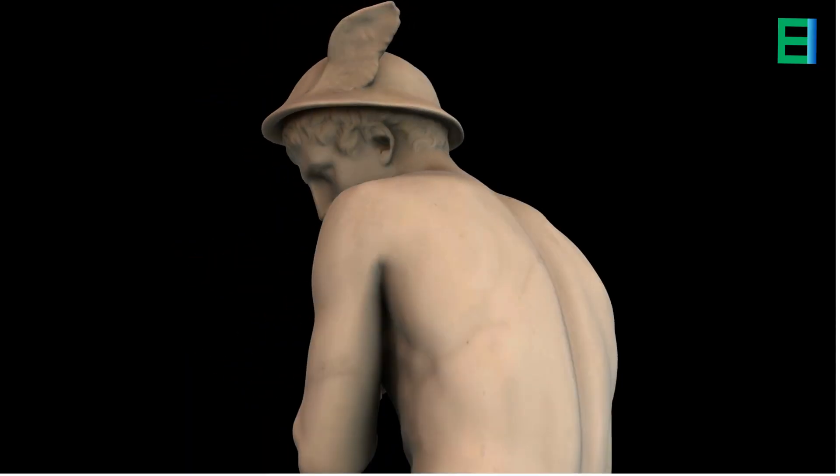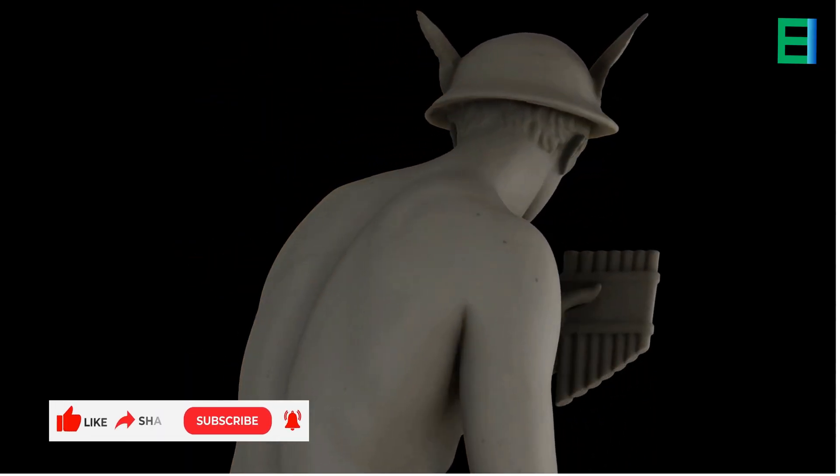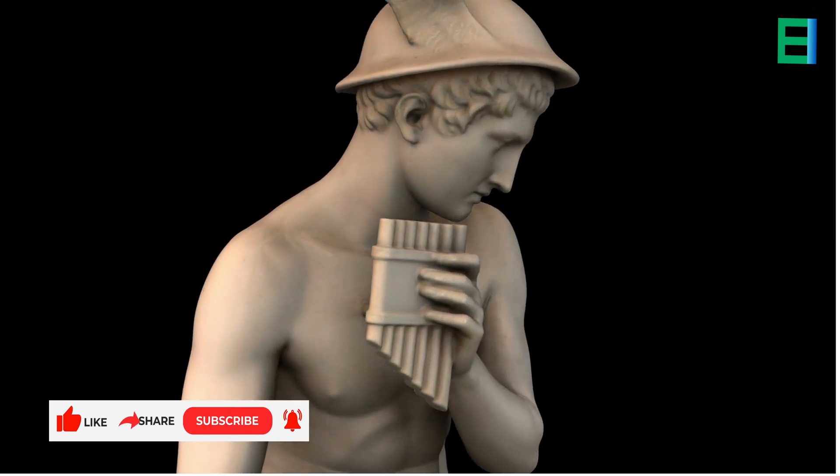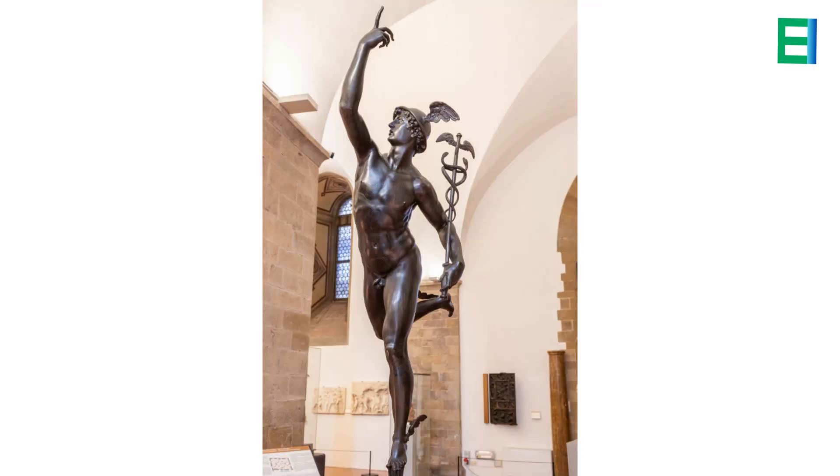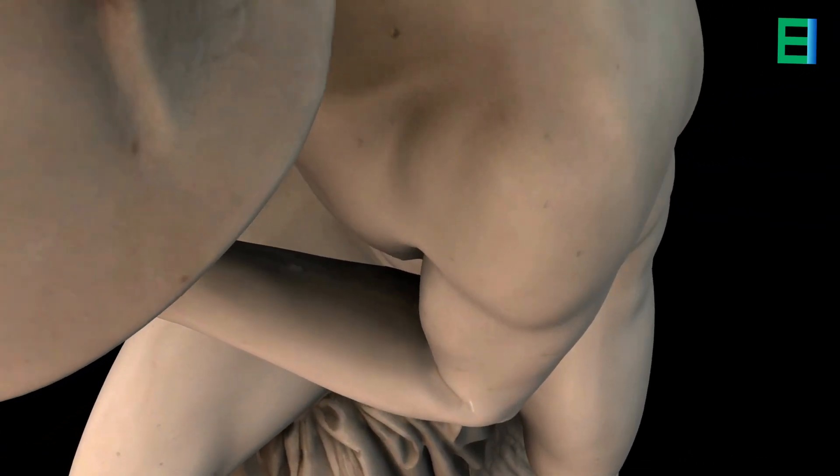Mercury, the celestial body that has captivated human curiosity for millennia, bears a name steeped in ancient mythology. The Romans, enchanted by its swift movement across the twilight sky, bestowed upon it the moniker of their fleet-footed messenger god Mercury.